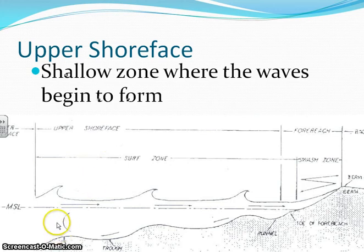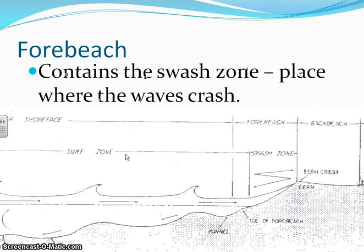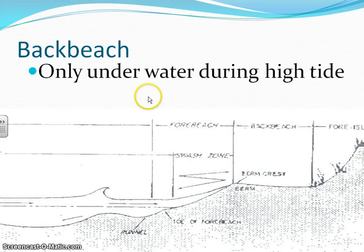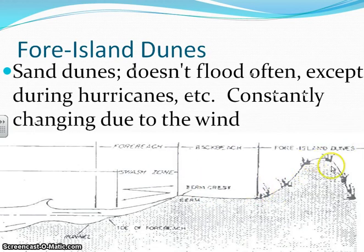The upper shoreface starts right where the waves begin to form. The forebeach contains what we call the swash zone — as you're walking along the beach and the water is kind of swashing back and forth, that's what we call the forebeach. The backbeach is the part that's only covered during high tide, so during low tide it's flat sand, and during high tide it's all covered up. The foredune island area is not covered during high tide and typically only floods during a big storm or hurricane.